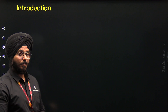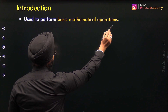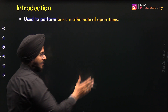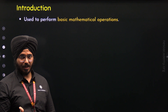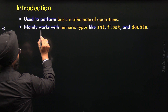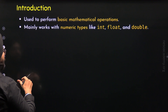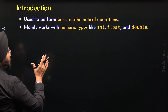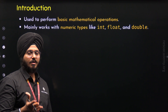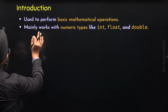So what are arithmetic operators? Arithmetic operators are used to perform basic mathematical operations such as addition, subtraction, multiplication, division, etc. Also, an arithmetic operator mainly works with numeric types like int, float, and double. In order to perform basic mathematical operations, data must be of numeric type like int, float, and double.